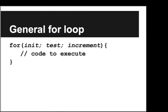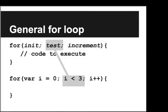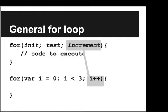So let's see what that looks like in a specific case. Here's our standard for loop where we count 0, 1, 2. So the initialization is setting i equal to 0, then the test is seeing whether or not i is still less than 3, and then the increment is we say i++.